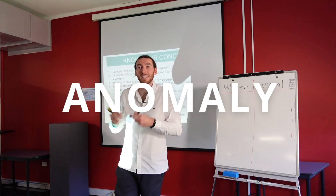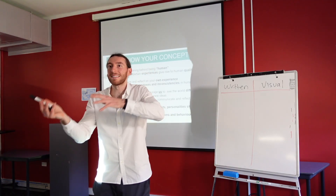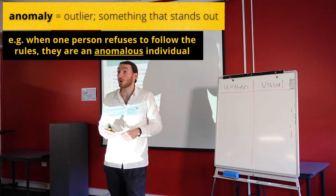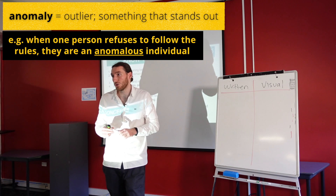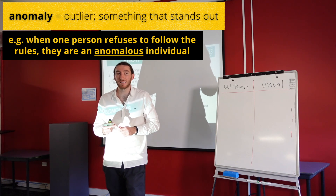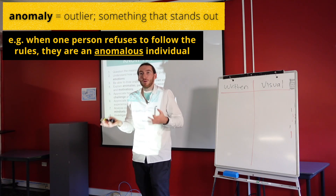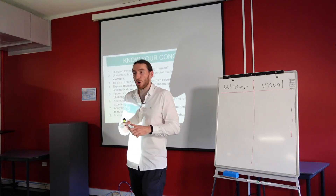Anomalies — what's an anomaly? It's an outlier, something that stands out. That could be in a positive way, a negative way, or neutral, but it's something that's different. Abnormal — it stands out from the norm.